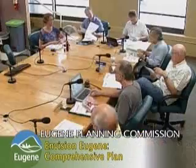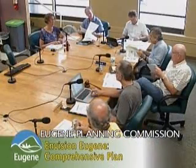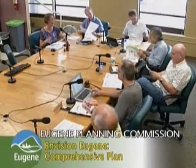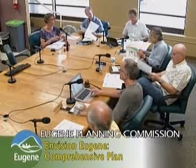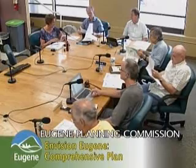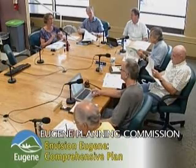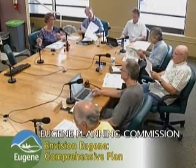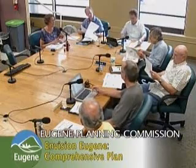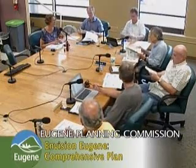A question was raised about which chapters are being covered and when. Chapters one and three are being covered today; chapters two, four, and nine are scheduled for September. Chapters five, six, and seven — covering livability, natural resources, and public facilities — are not required to be adopted at the same time as the urban growth boundary, and will have additional time and community process over the following year.